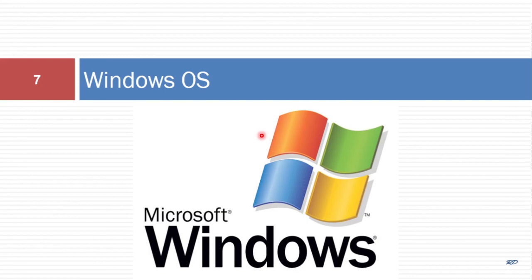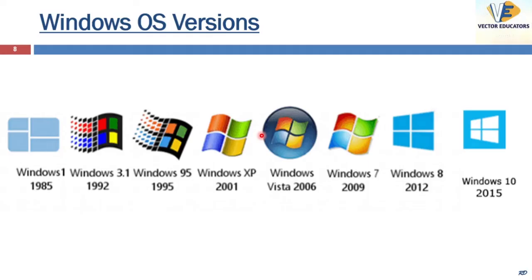All MS-DOS versions were command line interfaces. The development of the operating system with a graphical user interface started in the 1980s; however, it was not a separate OS — it used MS-DOS as the OS. Windows 1 was released in 1985, but Windows 1 and 2 were not a success. Then we had Windows 3.1, followed by the 9x series: Windows 95 in 1995, Windows 98 in 1998 (which had integrated internet functionalities), and the Millennium edition in 2000 with a focus on multimedia.